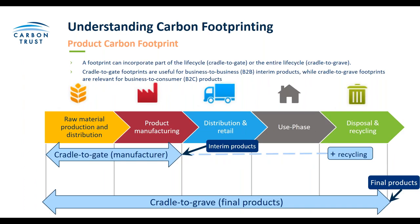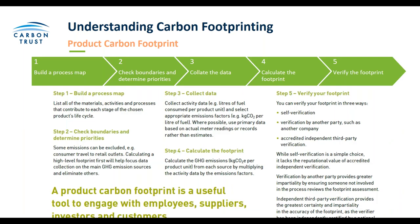A product carbon footprint boundary can be determined much like an organisational boundary. An organisation can look at a cradle to gate footprint, meaning up to the point of customer selling or business to business, or cradle to grave, which looks at the entire life cycle through to disposal — classed as business to customer. The steps for measuring a product carbon footprint are similar to an organisational one, but require a more detailed approach. This begins with a product process map — a list of all materials, activities and processes contributing to each stage of the chosen product's life cycle, requiring significant groundwork.